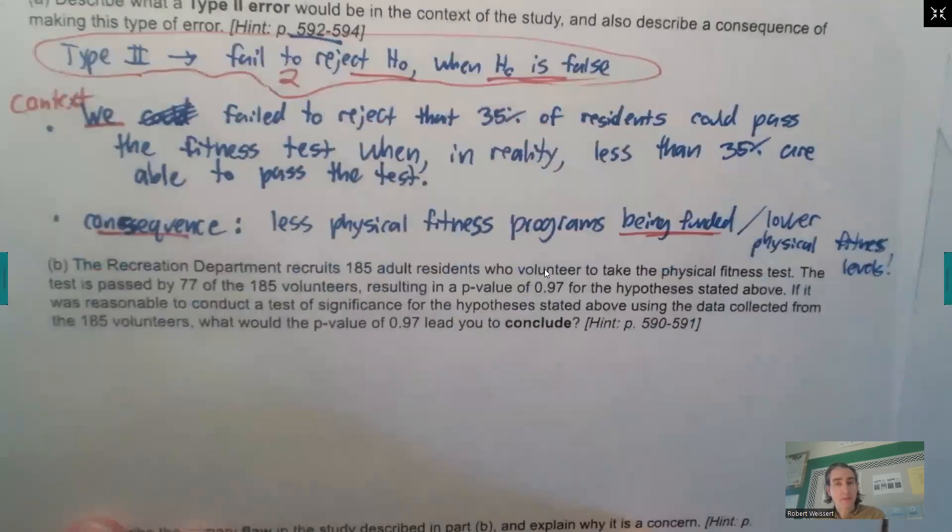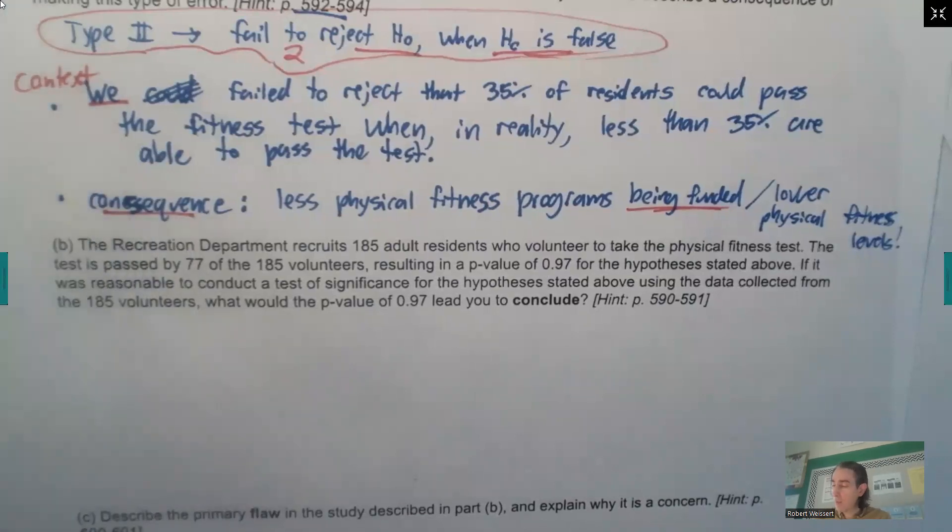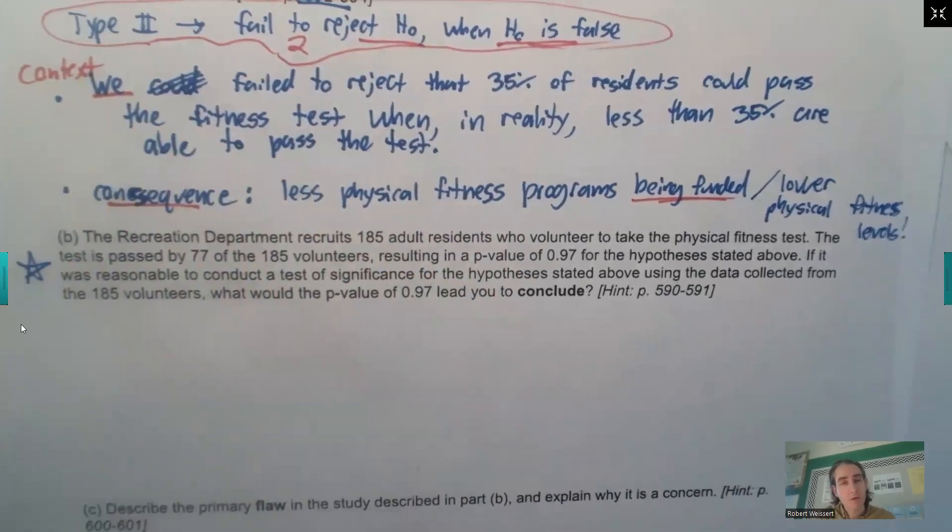Read through letter B, please. The recreation department recruits 185 adult residents who volunteer to take the physical fitness test. The test is passed by 77 of the 185 volunteers, resulting in a P value of 0.97 for the hypothesis stated above. If it was reasonable to conduct a test of significance for the hypothesis stated above using the data collected from the 185 volunteers, what would the P value of 0.97 lead you to conclude? Pause the video and try that one on your own. You can unpause it and we'll go over the solution.